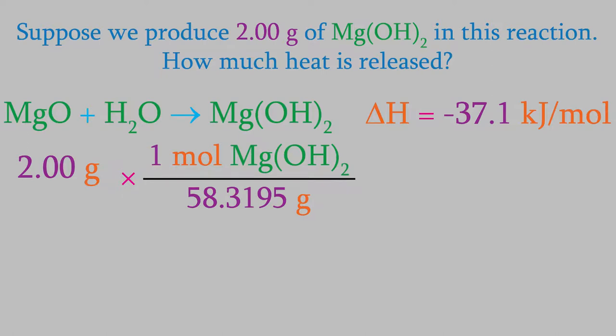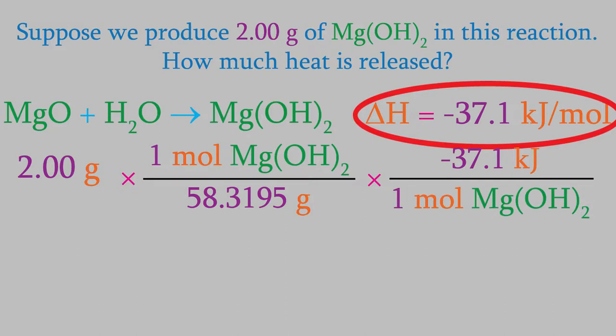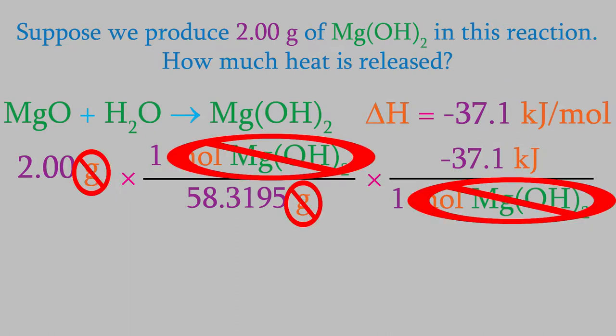If we were to stop the calculation here, we would get moles of magnesium hydroxide, but what we're really interested in is the enthalpy of the reaction. Luckily, we know the enthalpy per mole, so we can put one more conversion factor in this calculation to convert from moles to kilojoules. The reaction releases 37.1 kilojoules per mole, so that's our conversion factor. We want the moles to cancel, so one mole goes in the denominator, and the negative 37.1 kilojoules goes on top. The units all cancel out, except for the kilojoules, and we get a final answer of negative 1.27 kilojoules.